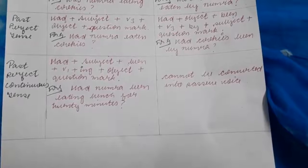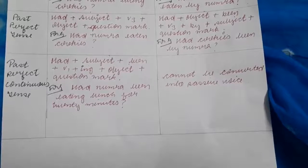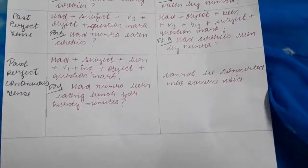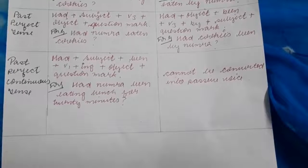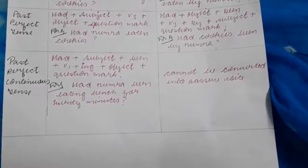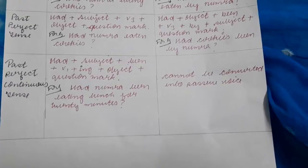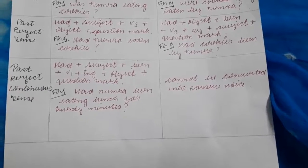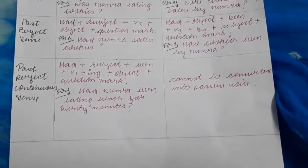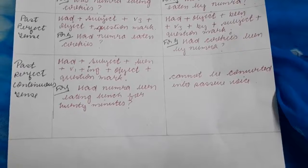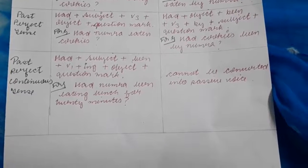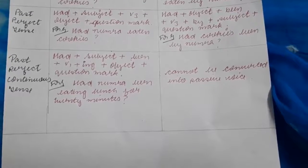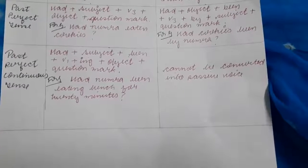Let's talk about the past perfect tense. Past perfect had, used for singular and plural. Had plus subject plus verb third plus object plus question mark. Had Numera eaten cookies? When we change it, we have the helping verb add to been. Had plus object plus been plus verb third form plus by plus subject plus question mark. So, had cookies been eaten by Numera?